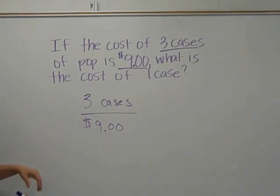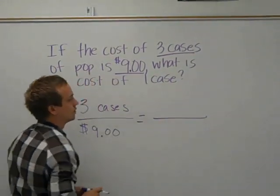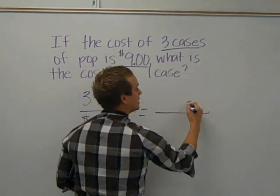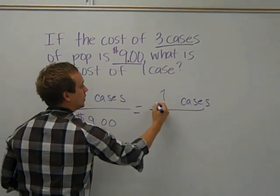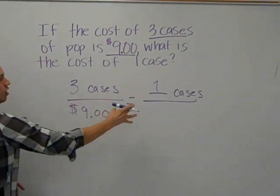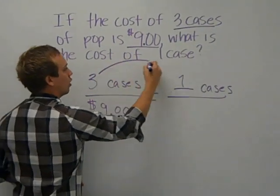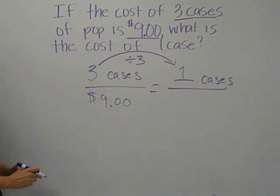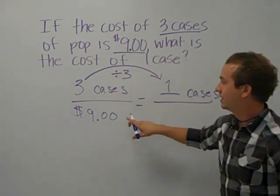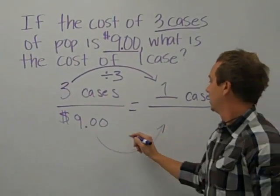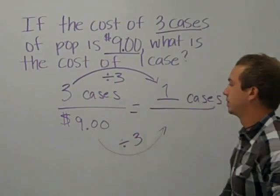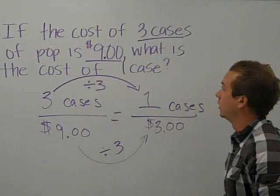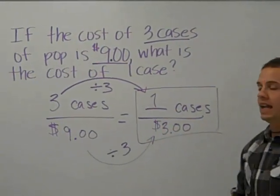In order to solve for the unit rate, I am going to set up an equivalent ratio. Since I want to know the cost of one case, cases are on the top here, so cases need to be on the top on the other side — it is one case. In order to go from three to one, I need to divide by three, because three divided by three equals one. Since I divided the numerator by three, I need to do the same to the denominator. Nine divided by three is $3, so it costs $3 for one case of pop.